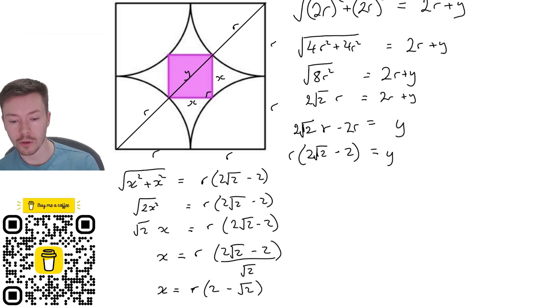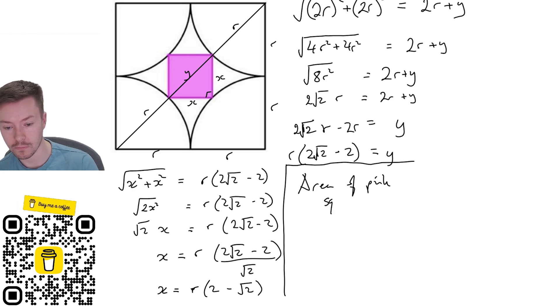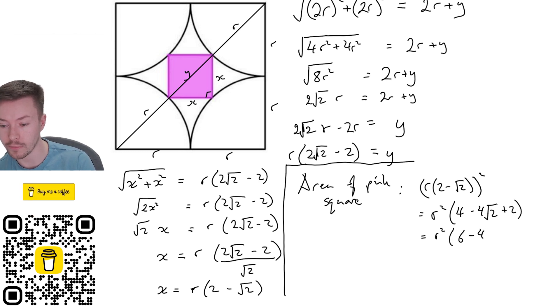Now what I want to do is work out the area of x squared. That's going to be r and 2 minus root 2 squared, because I've got x times x which gives me r squared and then 2 times 2 is 4 minus root 2 times 2 and I've got two lots of them, so it's going to be minus 4 root 2. Negative root 2 times negative root 2 will give me plus 2, so I get the area of the pink square is r squared times 6 minus 4 root 2.